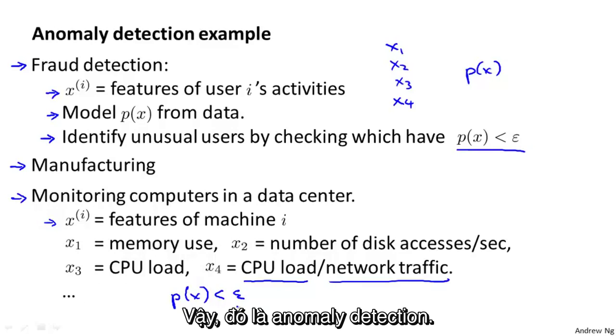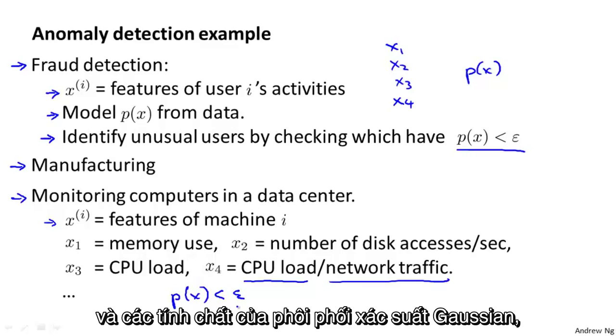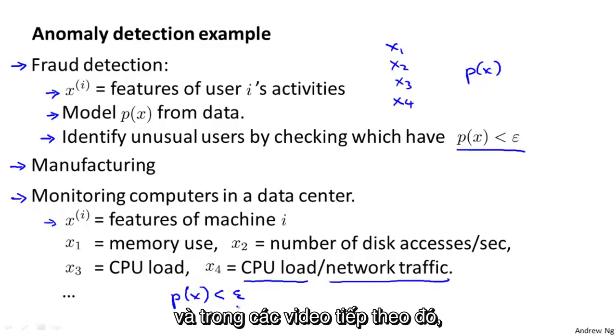So that's anomaly detection. In the next video, I'll talk a bit about the Gaussian distribution and review properties of the Gaussian probability distribution. And in videos after that, we'll apply it to develop an anomaly detection algorithm.